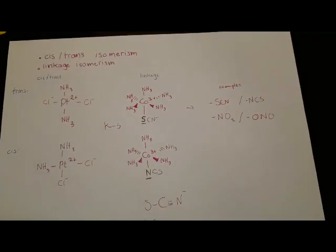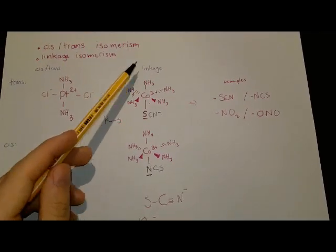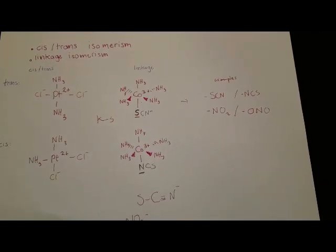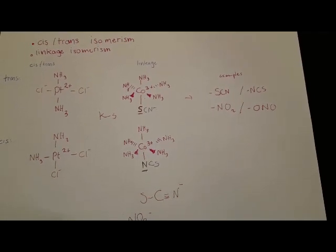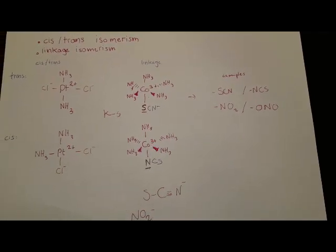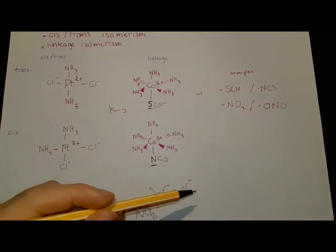The second type of isomerism which we can see is linkage isomerism. So that means that the ligand can be bound to the metal through different atoms. In this case, for example, we have this thiocyanate ligand, so it's SCN-. And it can form two types of complexes.